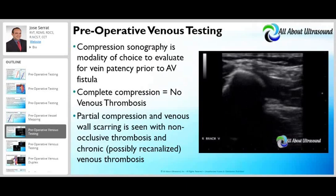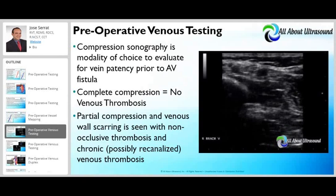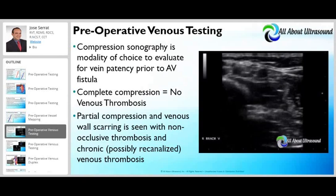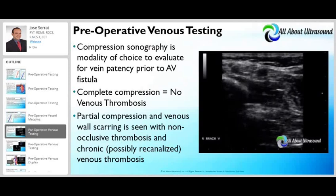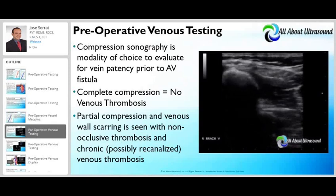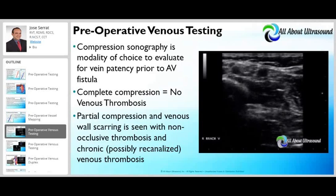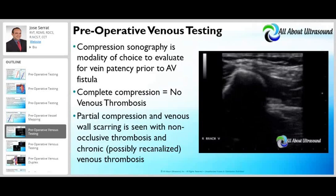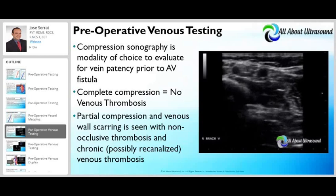In venous testing, compression is the modality of choice to detect deep vein thrombosis. When a vein is fully compressible, there is no DVT. Partial occlusive disease may show partial compression with scarring tissue, which may represent recanalized venous thrombosis.